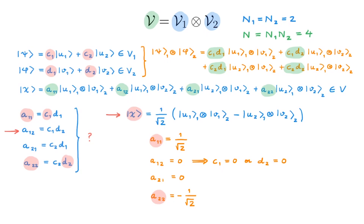Even this very simple state is an example of a state in V that cannot be written as a combination of two states coming from V1 and V2. States like these are called entangled states, and they play a major role in many of the most exotic properties of quantum mechanics. In fact, Schrödinger, who coined the term entangled states, described them as not one, but rather the characteristic trait of quantum mechanics — so you can imagine the important scope of this result.